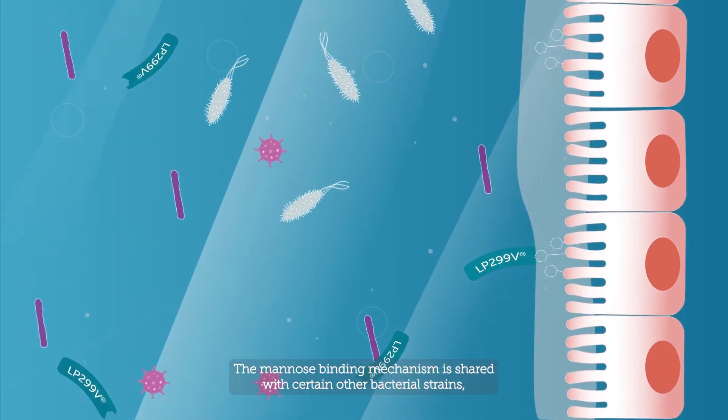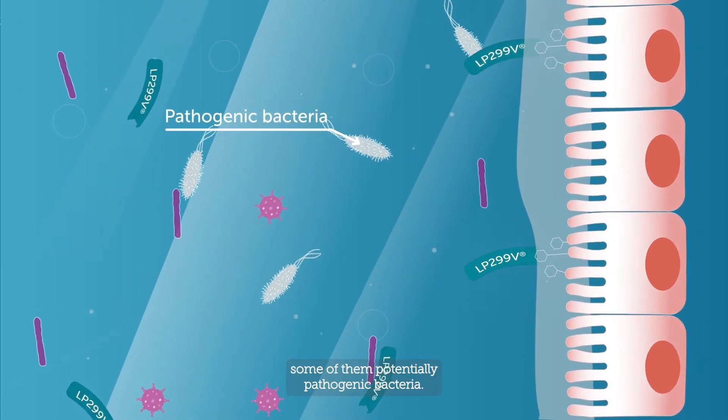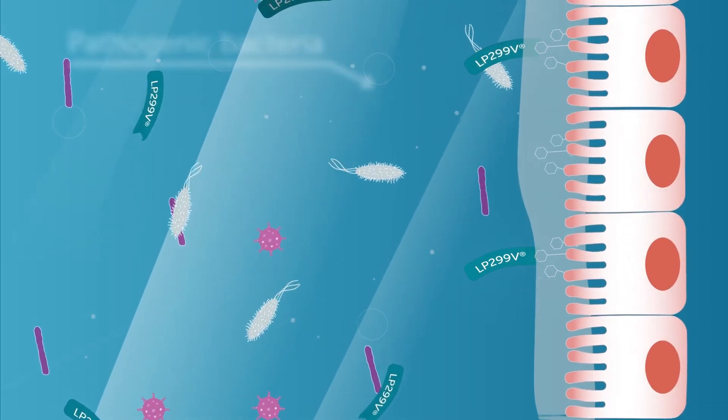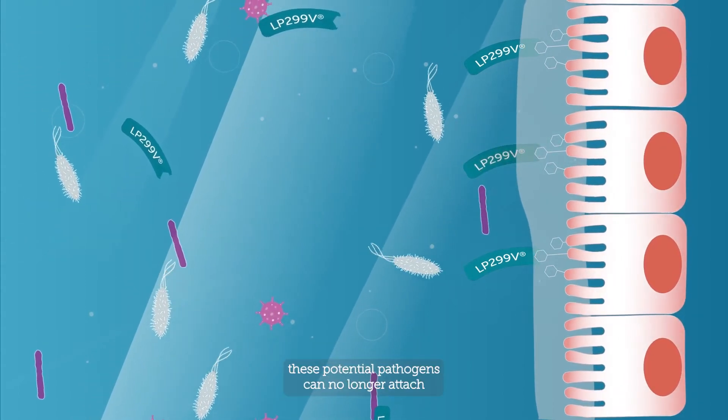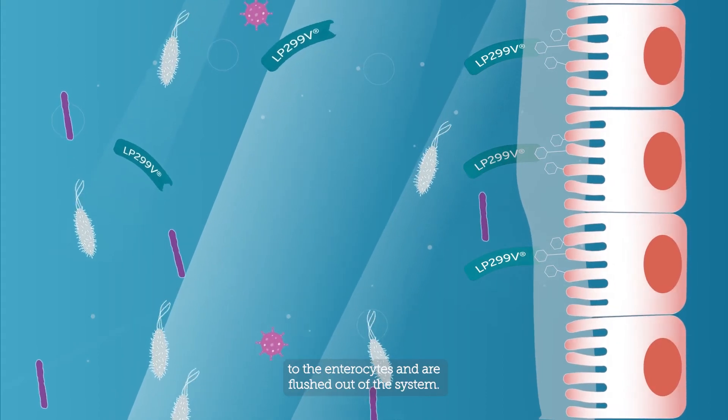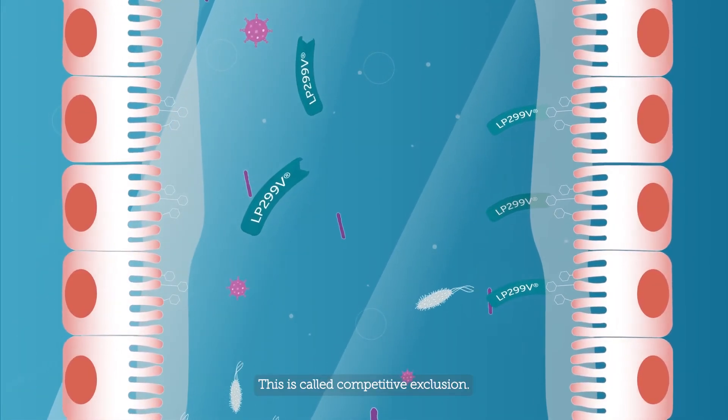The mannose binding mechanism is shared with certain other bacterial strains, some of them potentially pathogenic bacteria. When LP299V occupies the binding sites, these potential pathogens can no longer attach to the enterocytes and are flushed out of the system. This is called competitive exclusion.